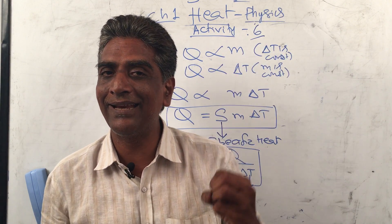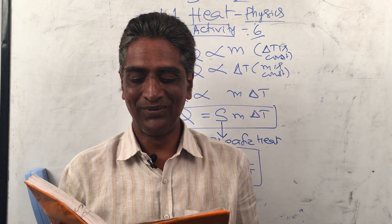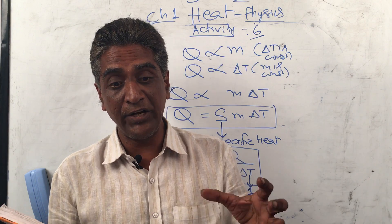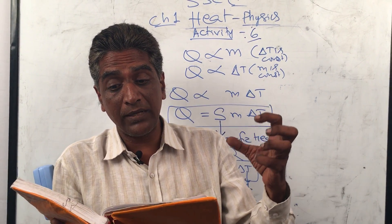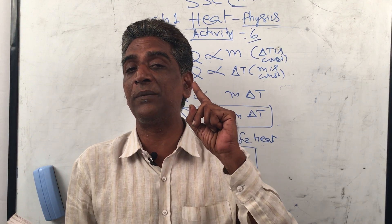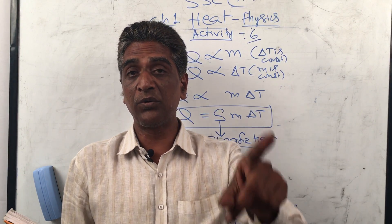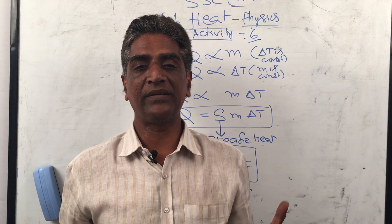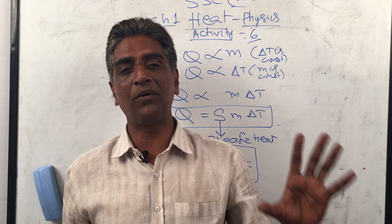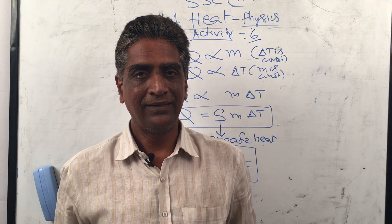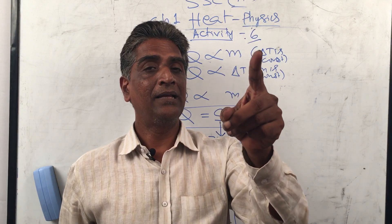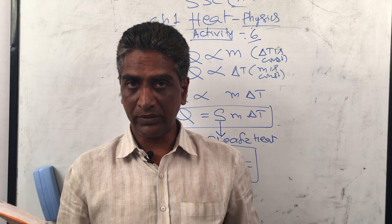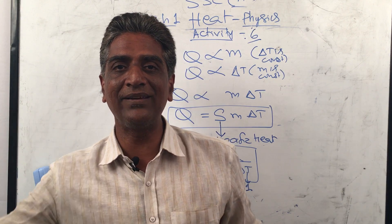The oceans absorb this energy while maintaining a relatively constant temperature. They behave like heat storehouses for the earth. The oceans can absorb large amounts of heat at the equator without an appreciable rise in temperature due to the high specific heat of water. The Sun keeps giving energy to the water, but water doesn't start boiling — its temperature rises slowly because specific heat is high.